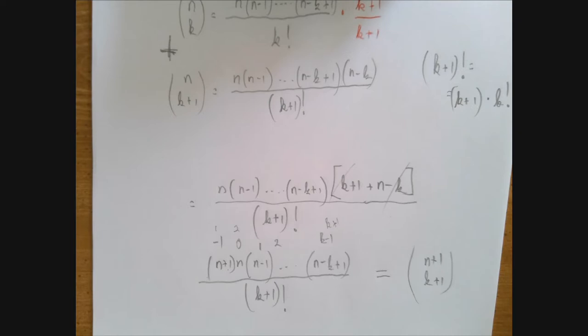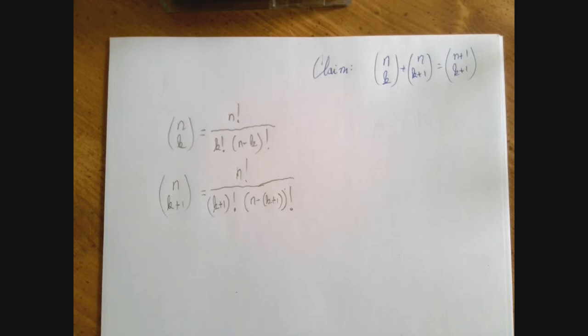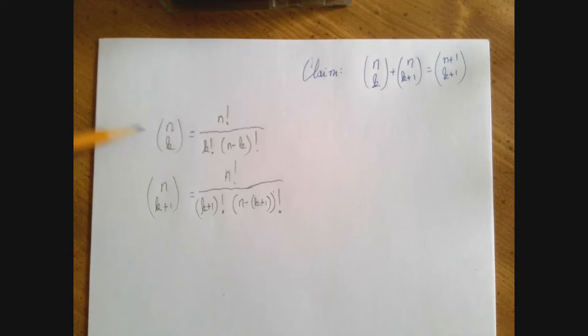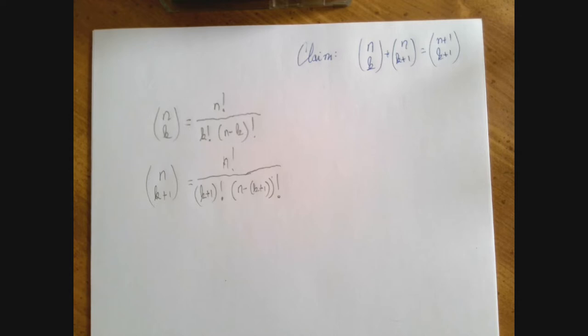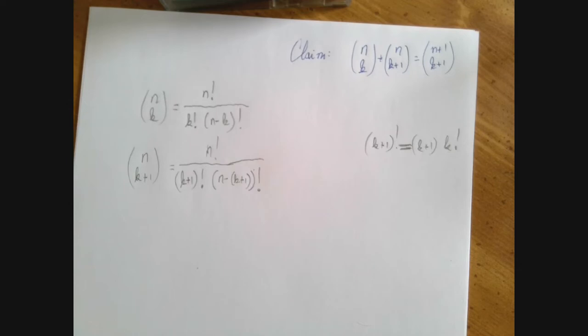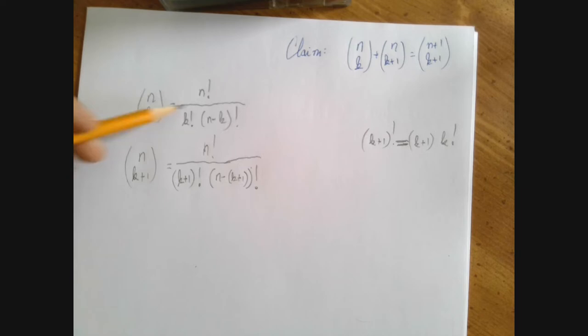This proof is not going to be really different from the previous one, only now we are using this different form of the combination formula that is more widely used in the US. But the ideas and the steps will be pretty much the same. We express n choose k and n choose k plus 1, and we're going to add them together. In order to add, we have to bring stuff to the common denominator first. We can match the k part of this denominator to this one if we just multiply both numerator and denominator by k plus 1.